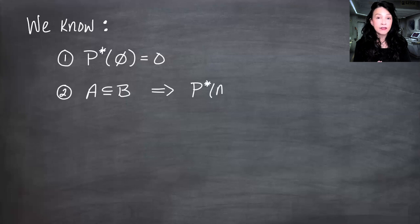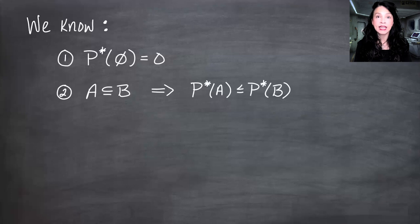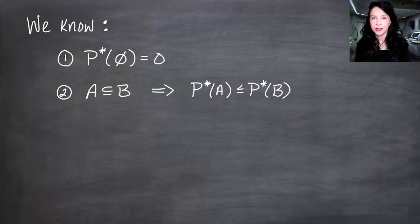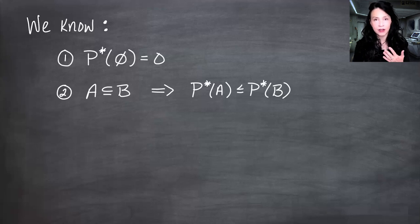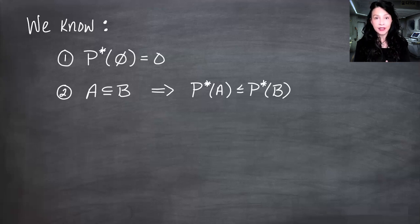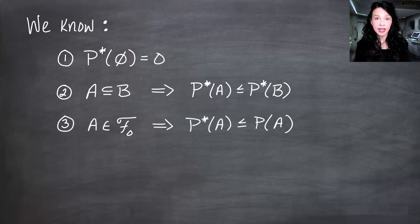We also showed last time that for any subsets A and B of omega where A is a subset of B, P-star of A is less than or equal to P-star of B. That was a consequence of having a measure when we first defined measures — it's true of all measures. It's true of what we defined here, but it's not enough to tell us that we have a measure.